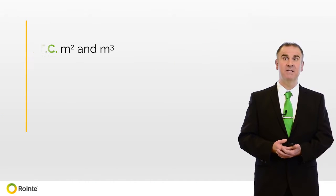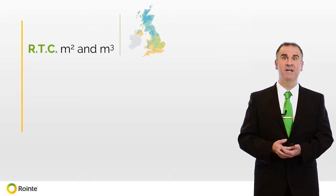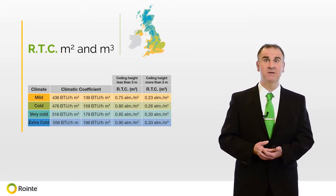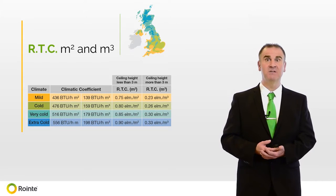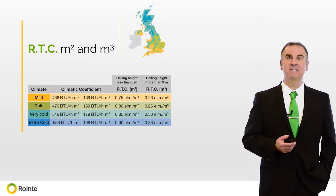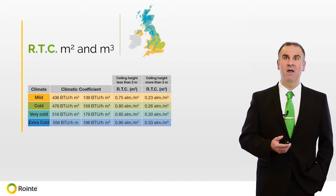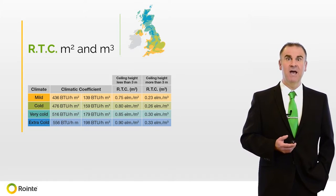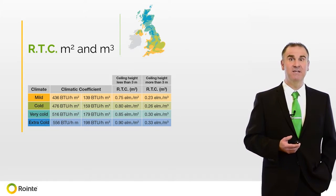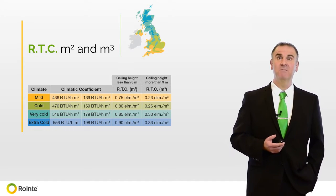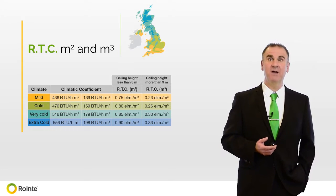To calculate the necessary radiators required, we must also establish the height of the ceiling. If the ceiling is less than three metres high, we can use the metres squared coefficient, and if the ceiling height is above three metres, we must use the metres cubed calculation.